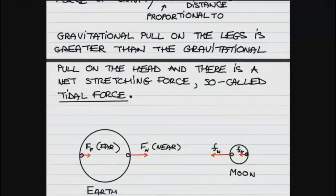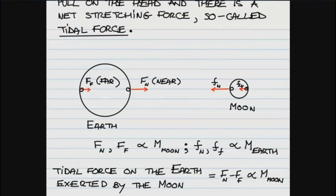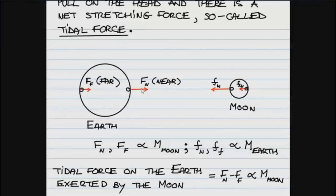That force is often called tidal force. Let's look at the Earth and the Moon. Not only does the Earth exert a gravitational pull on the Moon, but the Moon is also pulling on the Earth — forces always come in pairs, according to Newton's third law. On Earth, the side closer to the Moon experiences a bigger pull. And on the opposite side of the Earth, at greater distance from the Moon, it will experience less gravitational pull.